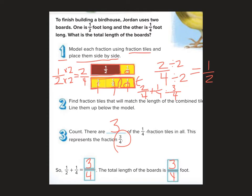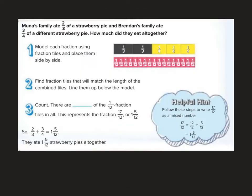Okay, let's go to the next example. Muna's family ate two thirds of a strawberry pie. Brendan's family ate three fourths of a different strawberry pie. How much did they eat all together? So notice the top row here is taking two thirds plus three fourths. Two thirds we're saying is one third plus one third. Three fourths is one fourth plus one fourth plus one fourth.